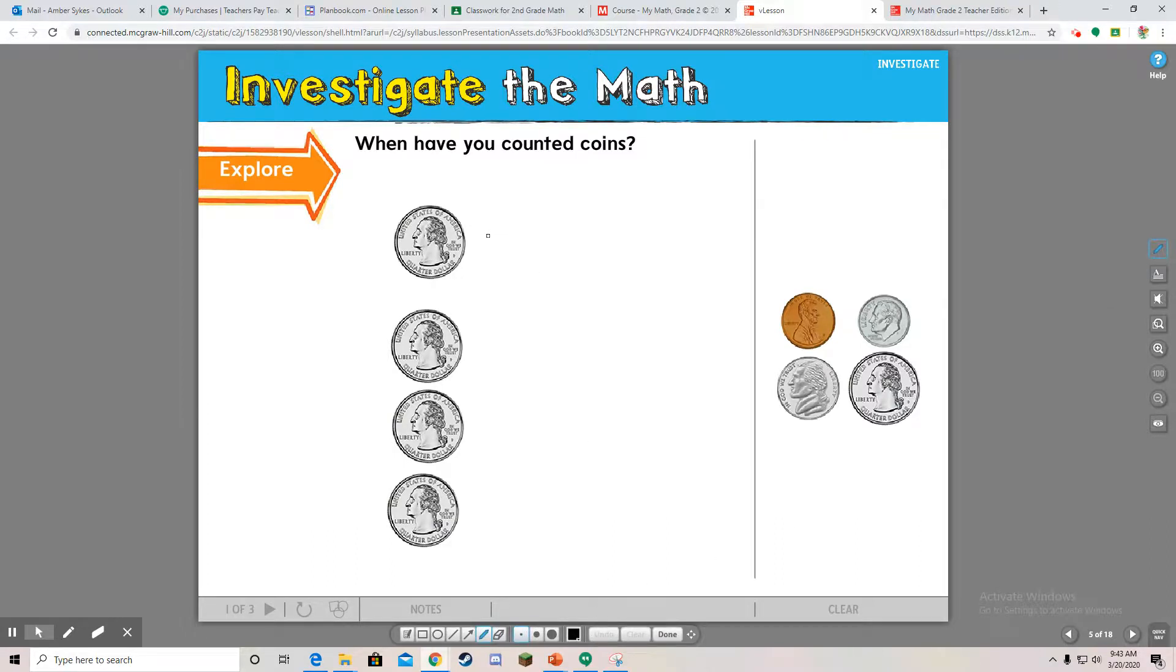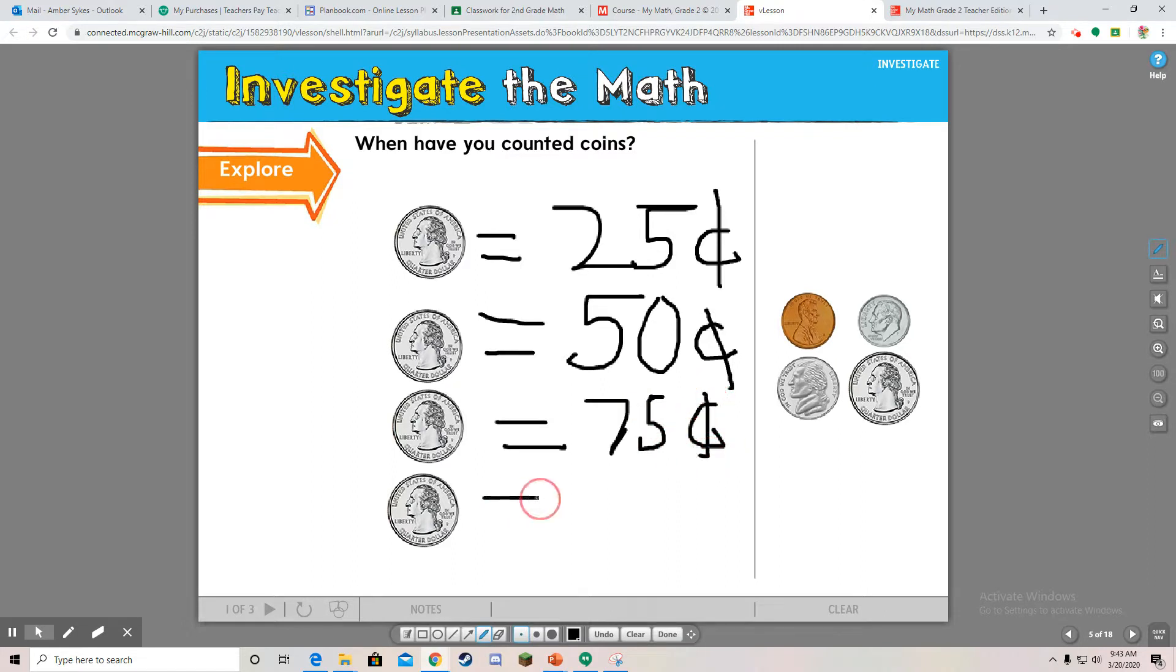So a quarter, one quarter equals twenty-five cents. I hope you guys watched that video, the song last week I uploaded. It was a very catchy song to help you remember how to count quarters. One quarter, twenty-five cents. Two quarters, fifty cents. And this is half of a dollar, fifty cents. One quarter, twenty-five cents. Two quarters, fifty cents. Three quarters, seventy-five cents. And if you have four quarters, you have one dollar.